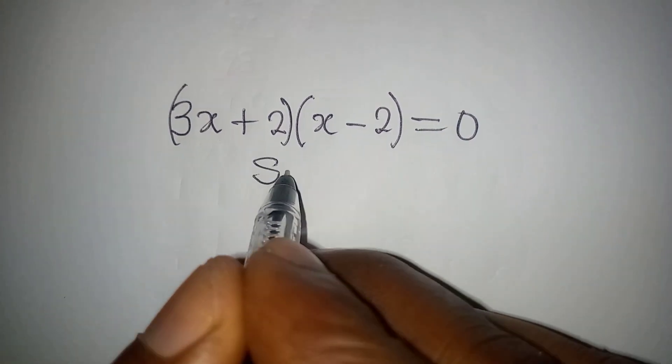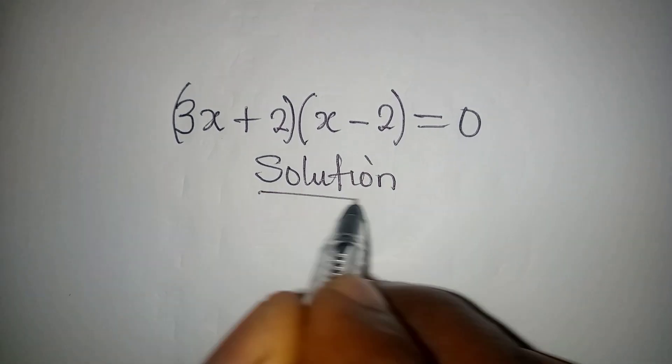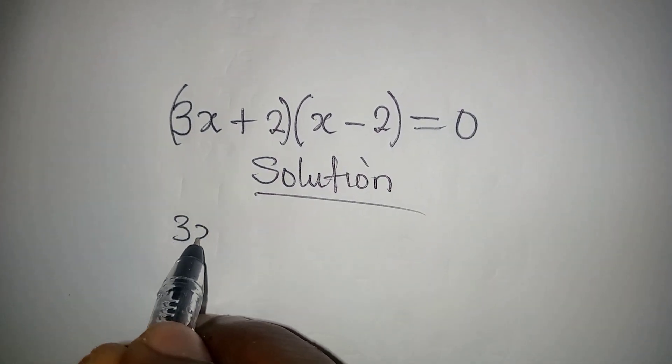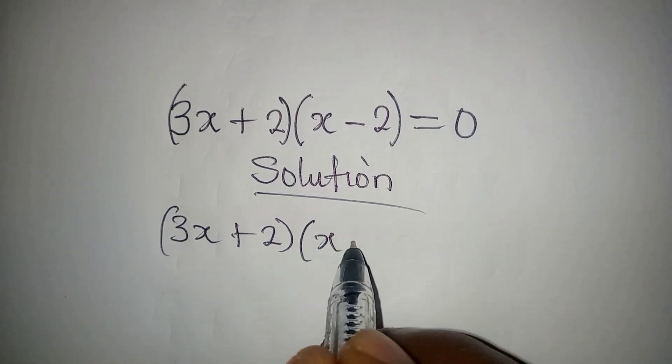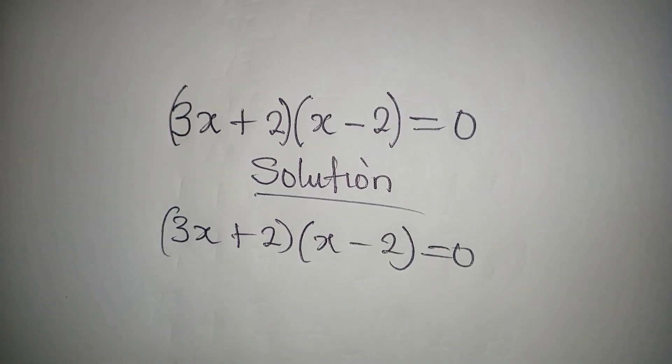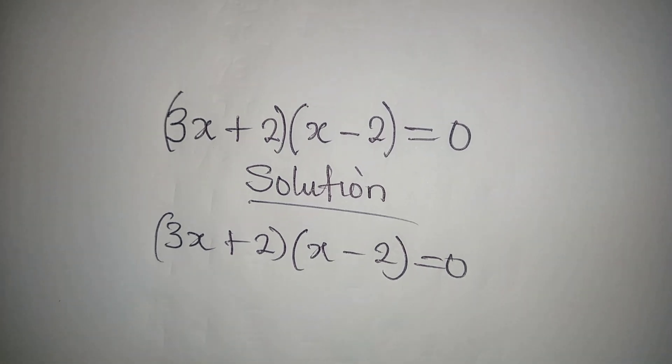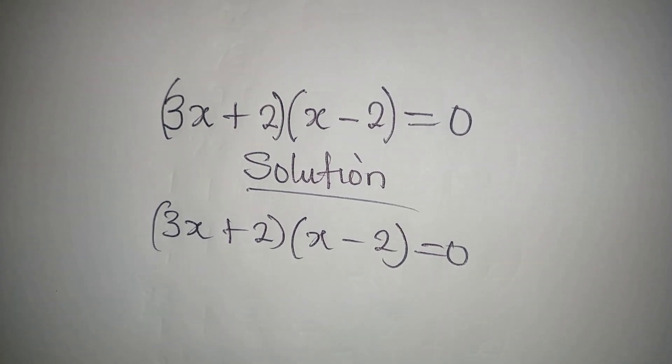Hello everyone, let's provide a solution to this problem: 3x plus 2 into x minus 2 equal to 0. Now, if you give this problem to some students, they would be trying to open this bracket, right? But that is not necessary.